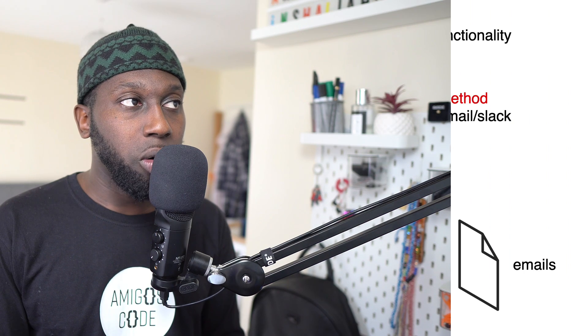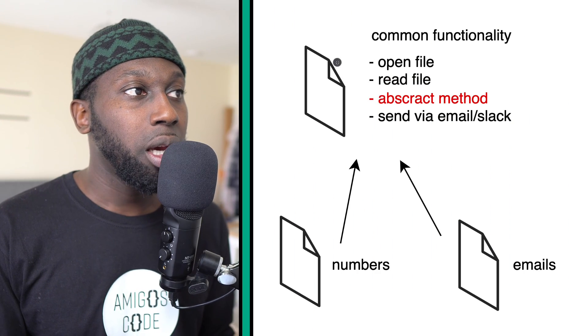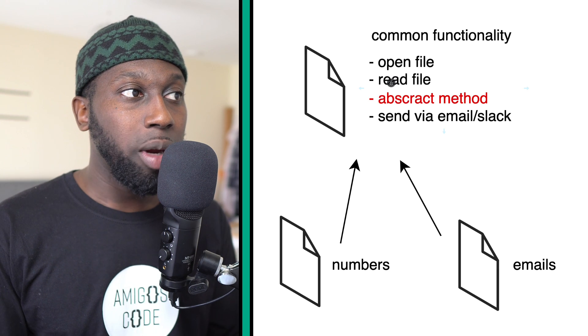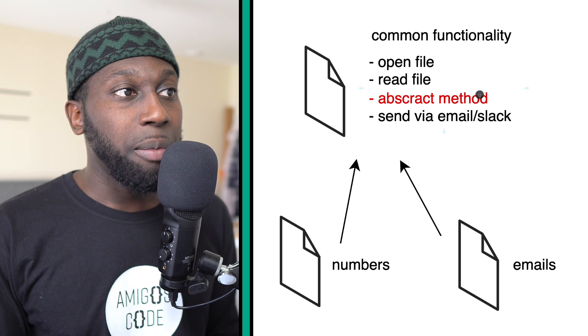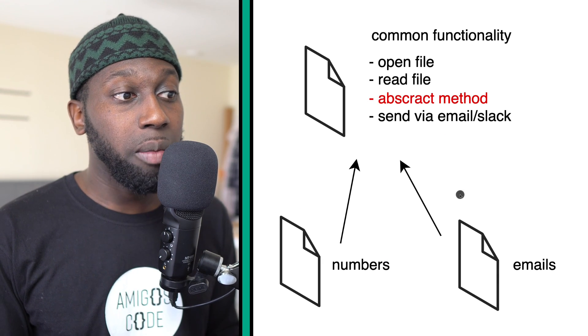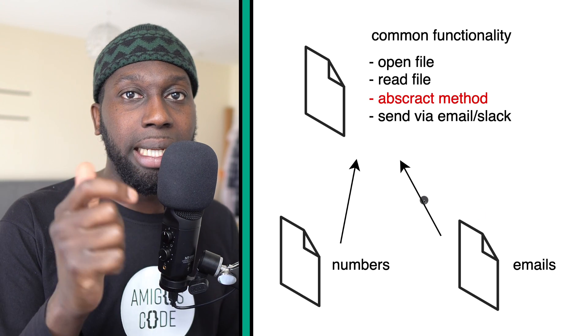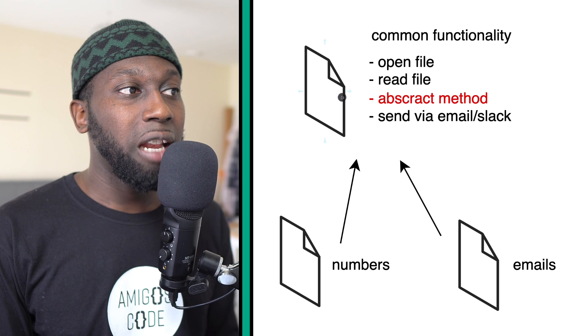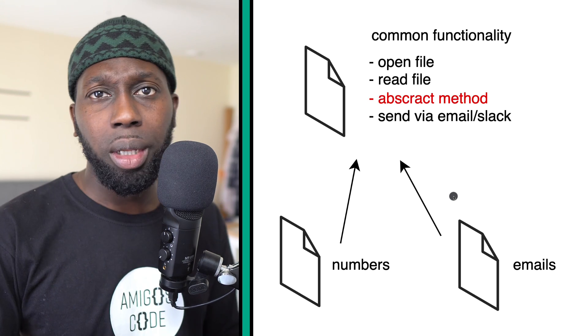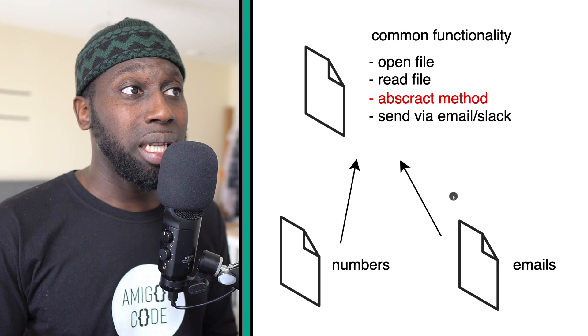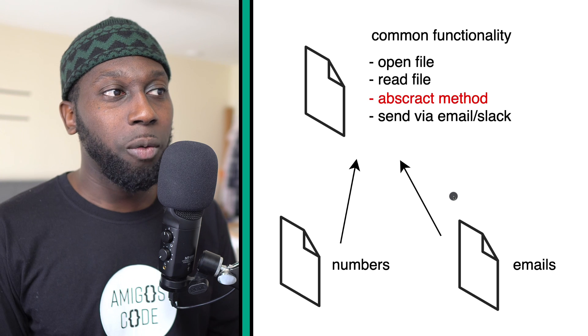So just have a look at this example here where we have one class with some common functionality. Maybe this class is responsible for opening the file, reading the file, and then we basically want to produce some kind of report. This will be an abstract method so that all of these different implementations can change a slight variation of the main functionality. And then at the end, maybe you want to send the report via email. I don't teach you about cats nor dogs, because you're not going to be writing cats, dogs, shapes, squares, rectangles in production. So let me teach you with a real example.